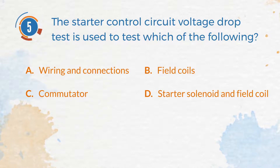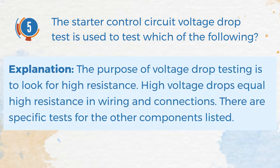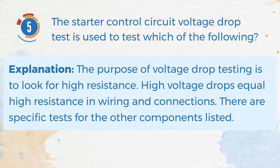The correct answer is A. Wiring and connections. Explanation: The purpose of voltage drop testing is to look for high resistance. High voltage drops equal high resistance in wiring and connections. There are specific tests for the other components listed.